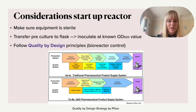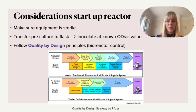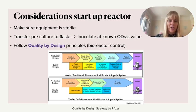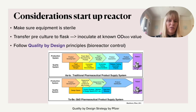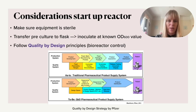When you start up a reactor and have decided on your impeller type, the first thing to consider is sterility — this is a big problem in bioreactors. When you inoculate your culture, all equipment needs to be sterile, and cleaning between different batches is very important. You take your pre-culture from a shake flask and inoculate at a known OD600 value. This optical density gives you an idea of the cell count, and for a well-characterized system like E. coli, these starting values are known. You then monitor as the process proceeds.